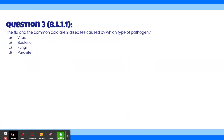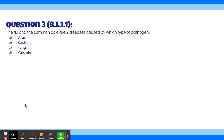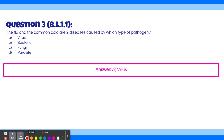Question 3: The flu and the common cold are two diseases caused by which type of pathogen? A, virus. B, bacteria. C, fungi. D, parasite. The answer is A, virus. One way to think about this is that many people take the flu vaccine every year. Vaccines are only for viruses — you can remember this because V for vaccine and V for virus.